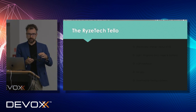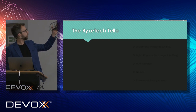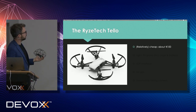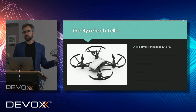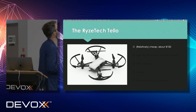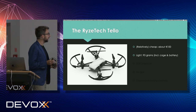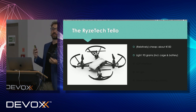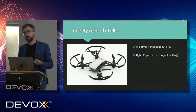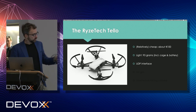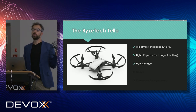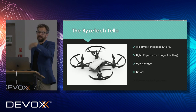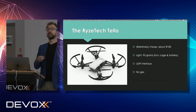The drone of choice is from a company called RiseTech — it's the Tello. It's relatively cheap at around 100 euros, which is a lot better than the 2,000 euros we saw before. It's really light — including the battery and the cage, it's 95 grams. The lighter a drone is, the safer it is, because it won't be as powerful. This drone has a UDP interface — that's the protocol it uses for communication. It has no GPS, which is maybe obvious for this price, and we're flying indoors so we don't need it.